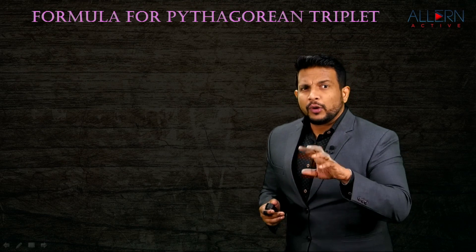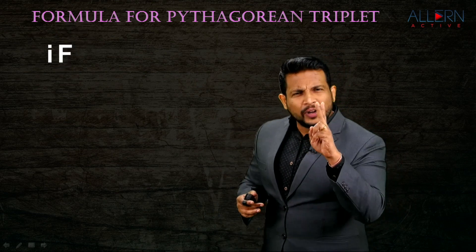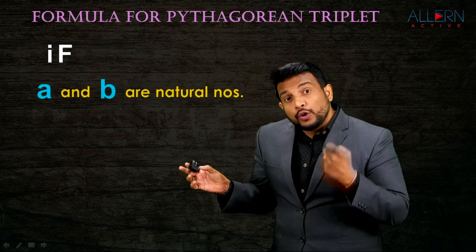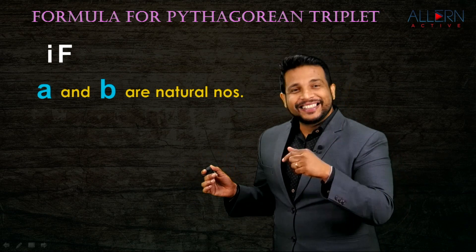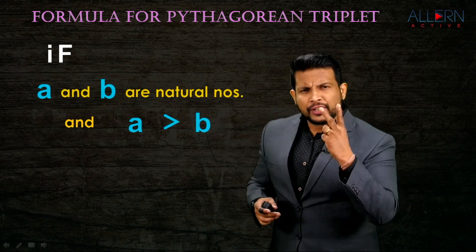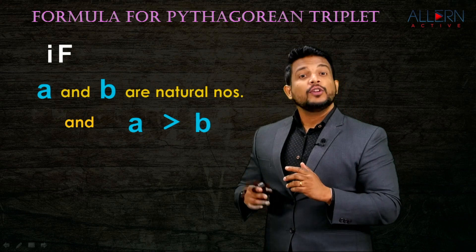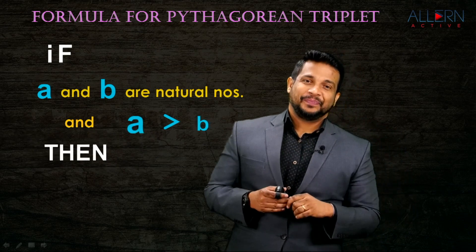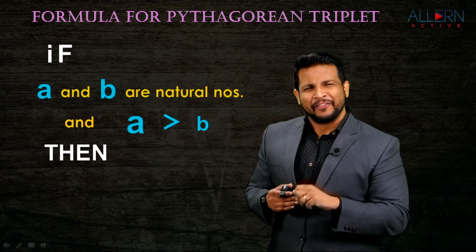We are talking about a Pythagorean triplet - a triplet of natural numbers. We need to take two natural numbers, let us say A and B, such that A is greater than B. If A and B are two natural numbers where A is greater than B, then we can form the formula for getting that Pythagorean triplet.